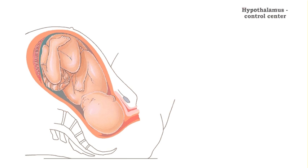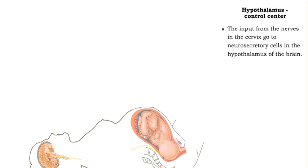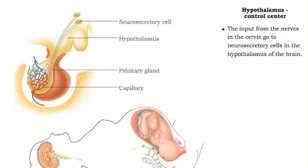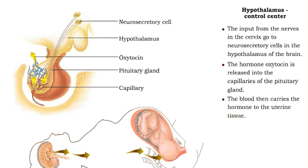The impulses received from the nerves in the cervix trigger neurosecretory cells in the hypothalamus to secrete and release the hormone oxytocin. Oxytocin diffuses into the blood capillaries of the pituitary gland and is transported to the uterus.